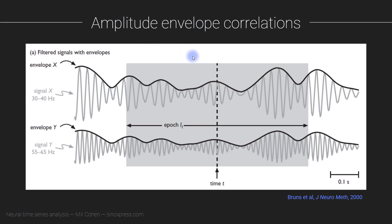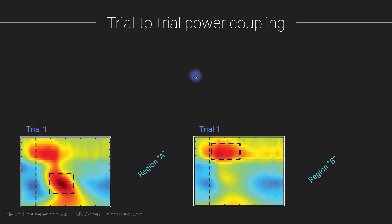All right, so this is one method: amplitude envelope correlations. Another method is called trial-to-trial power coupling. So here we have region A and region B—so this can be electrode Fz and electrode O5 or whatever.